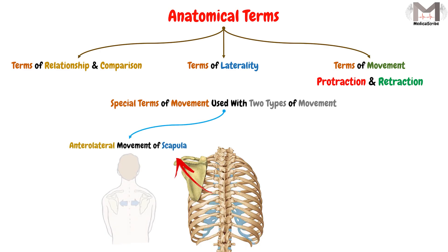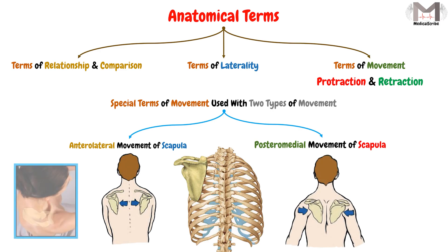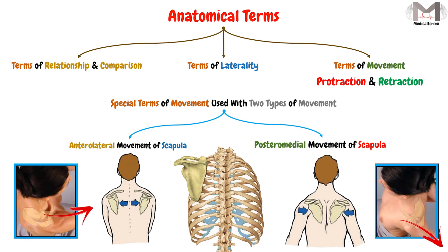The anterolateral movement of the scapula on the thoracic wall, and the posteromedial movement of the scapula also on the thoracic wall. Through these two movements the shoulder will move either anteriorly or posteriorly. Now we will talk about each one of them and understand it with all its details.